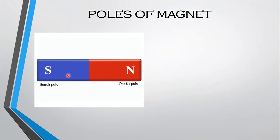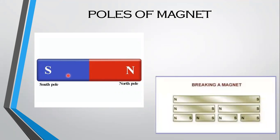The poles always exist in pairs. It is found that each part has two poles when a bar magnet is broken into two. If each part is again broken into smaller pieces, each piece has two poles. One pole cannot be separated and isolated from the other.